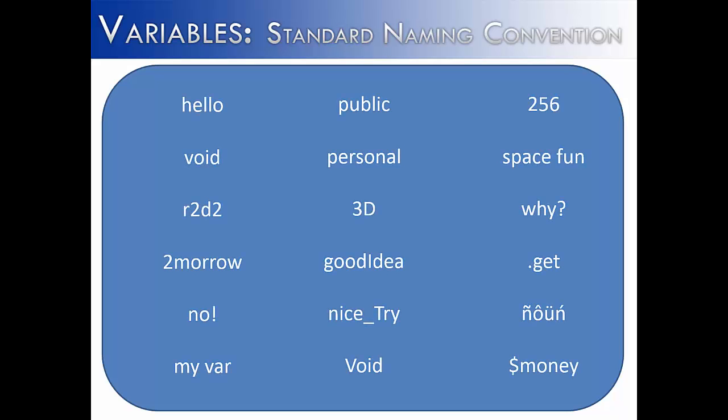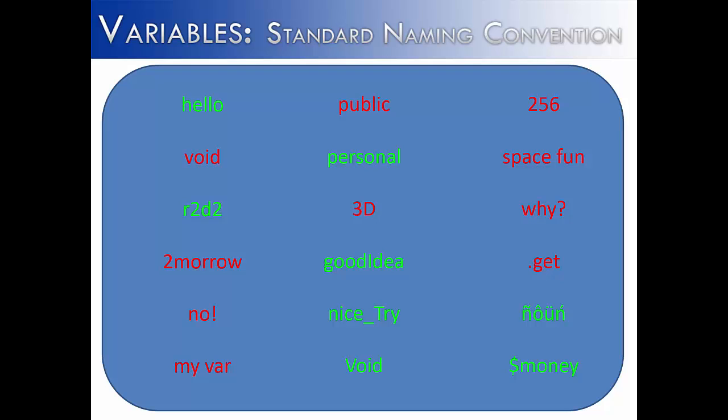Now in this slide, I've given you some examples of identifiers. Go ahead and pause the video for a second and try to see if you can figure out which ones are legitimate and which ones are not. Hopefully you've gone through and decided — in green I have highlighted the ones that are okay, and in red I have shown the ones that are not.